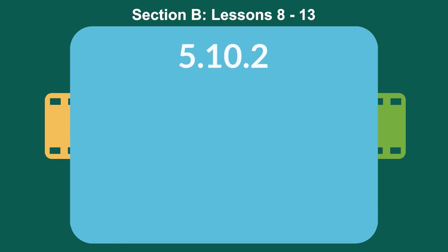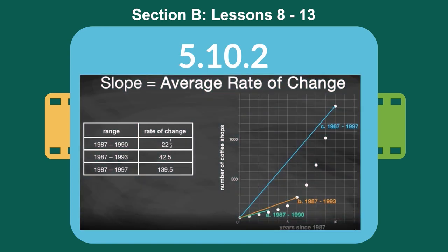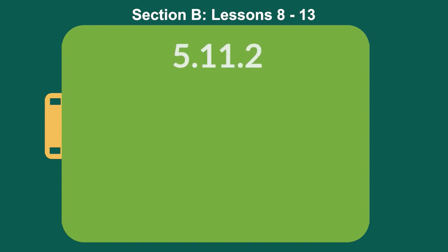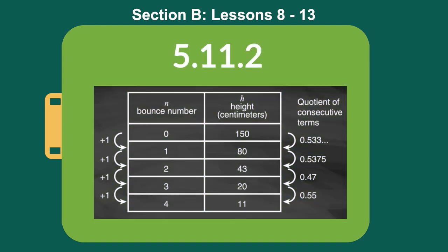In addition, in lesson 5.10.2, the video provides a great visual comparison of the rate of change for something that is linear versus something that is exponential for given periods of time. And then in lesson 5.11.2, if your students are still struggling to understand how exponential functions are different from linear functions, the explanation of the table provides specific numeric values as illustration of the inconsistency over time.